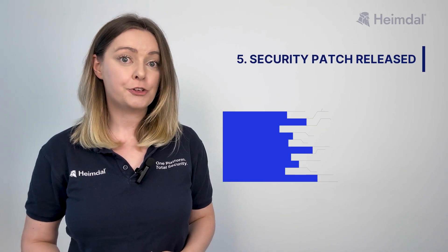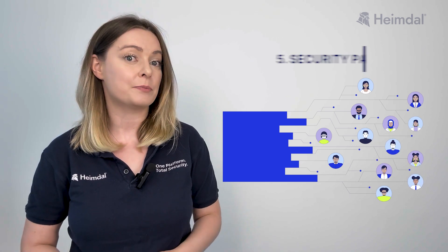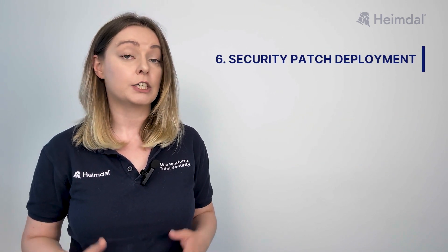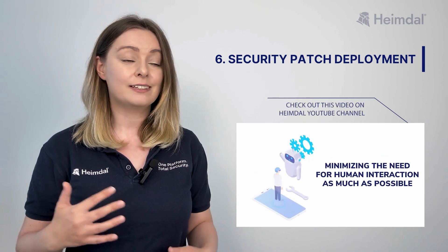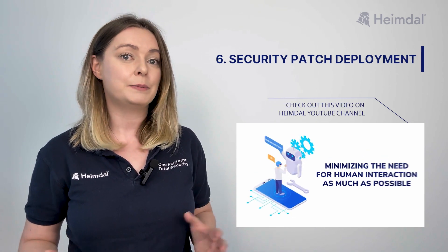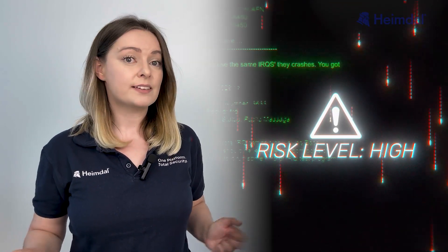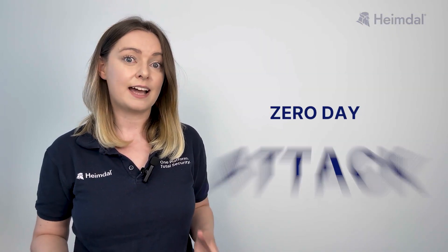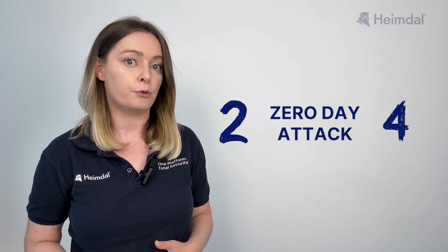A public fix is issued, though the timeline depends on the vendor's development process. Security patch deployment — users must apply the patch, which can take some time. Automatic updates help mitigate this delay. Systems are at risk during all seven stages, but a zero-day attack specifically occurs between stages two and four.